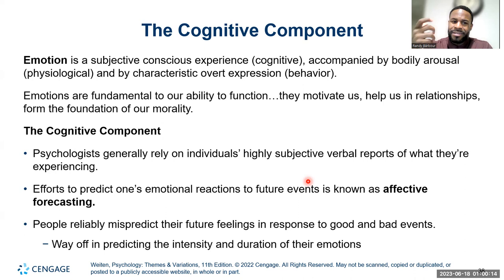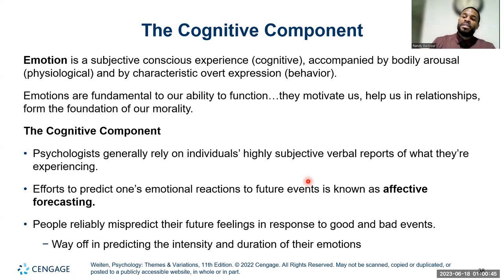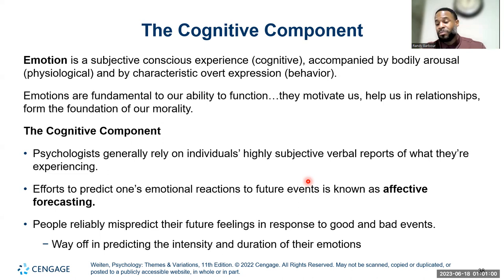The cognitive component of emotion is what we call the subjective experience — everyone has a different experience. We can be in the same room, watch the same movie in a theater, and have very different experiences. Some of us may be elated, some sad, some indifferent. Everyone has a very subjective, conscious experience of their emotions. Some people, like those high in neuroticism, are really high-strung and have a lot of anxiety. Some are laid back. Extroverts don't get as much anxiety meeting new people, while introverts may experience a lot more fear. The cognitive component is really highly subjective.